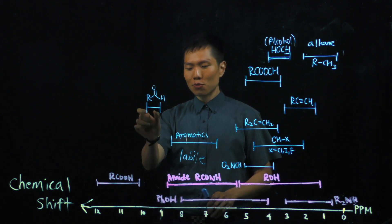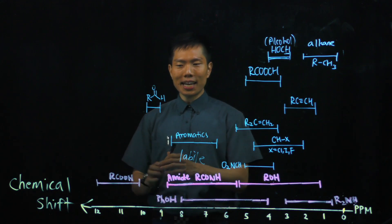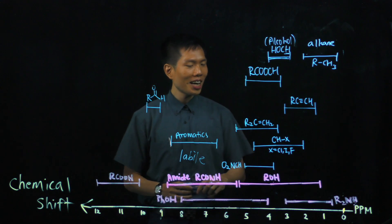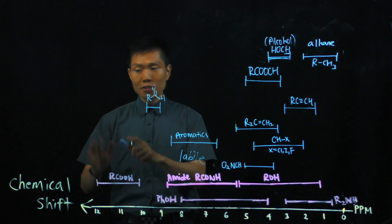Oh, I've got a proton from this region, about 10 ppm. So in the molecule, there should be an aldehyde group. And I have maybe, oh, 11.6 ppm signal. I think I should have a carboxyl group somewhere.